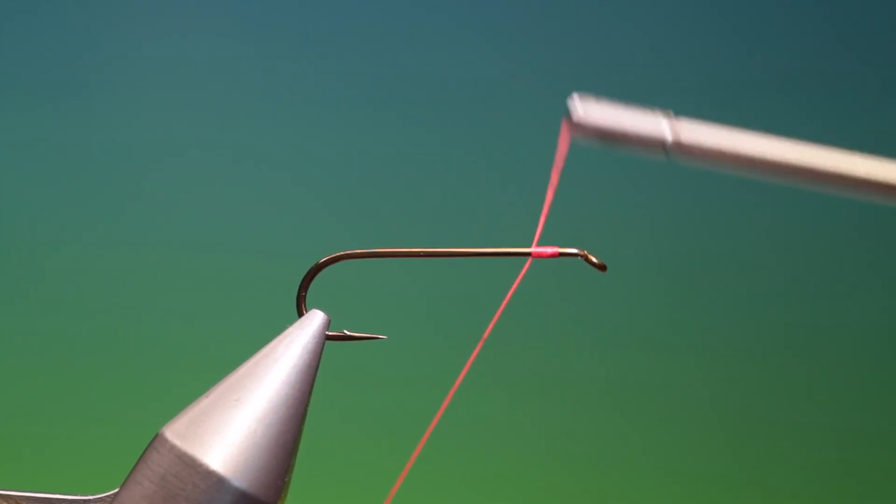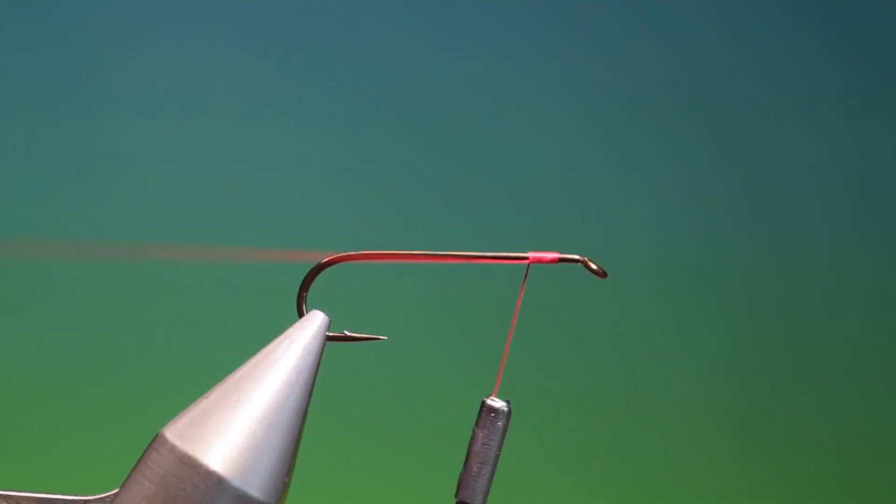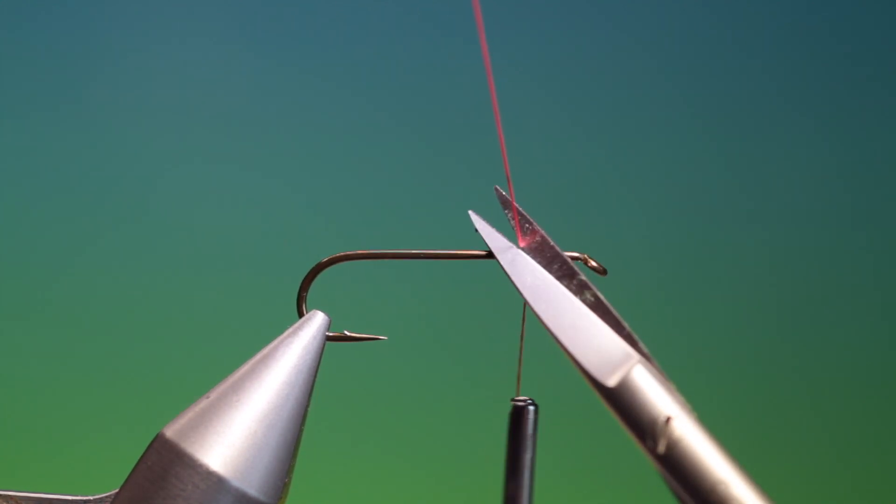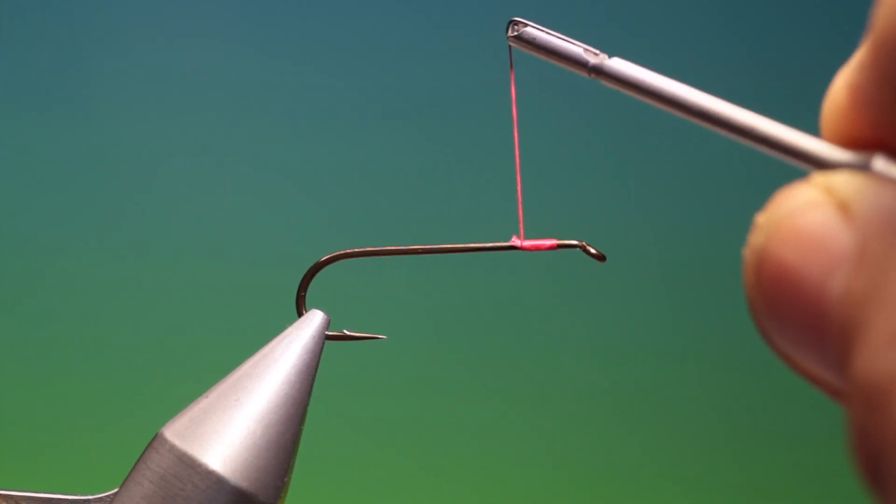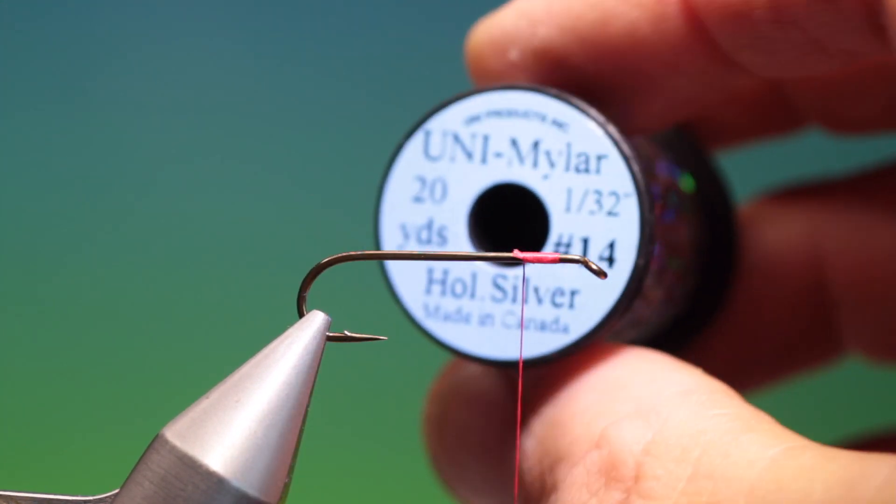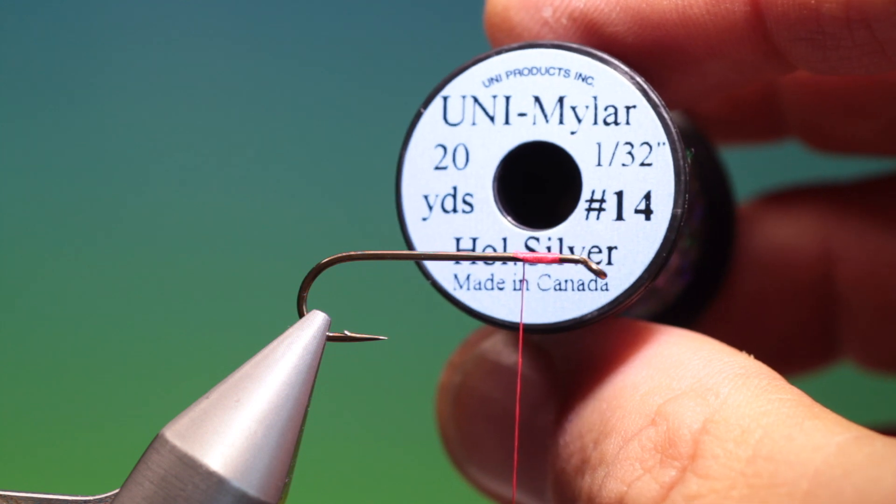And we want to go back to about there and remove that and just tag that end in. We want a length of unimaler, holographic silver or whatever color you would like the body to be.